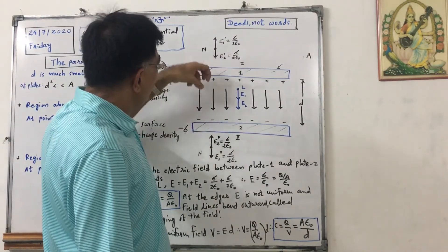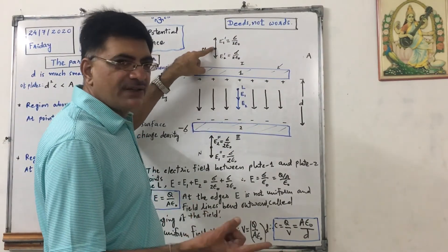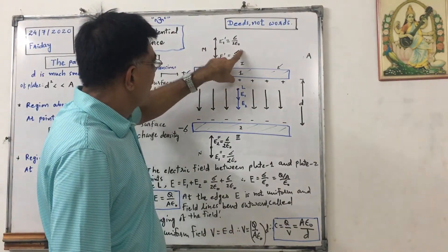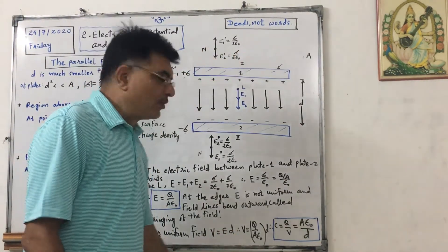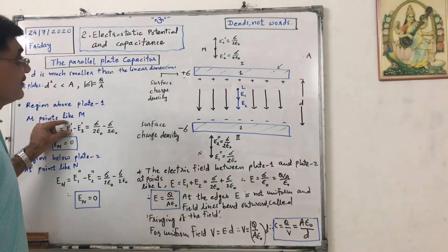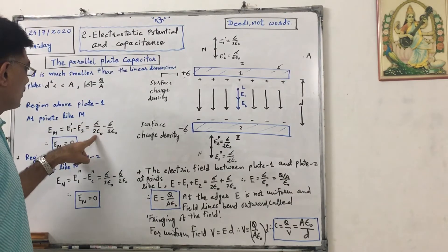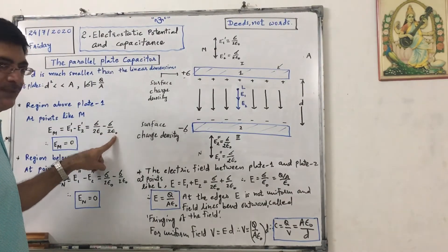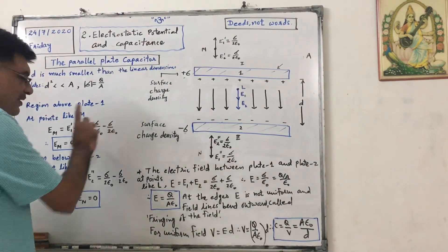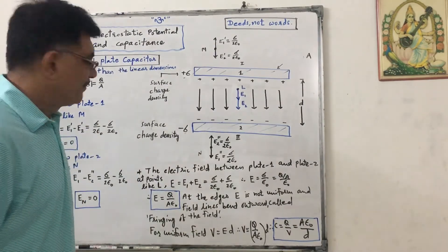And this negative plate will attract because we have considered test charge as positive charge. So that will be E2 dash equals to sigma upon two epsilon naught. So net field will be E1 dash minus E2 dash, that will be sigma upon two epsilon naught minus sigma upon two epsilon naught. It will be zero. This field does not depend on distance.